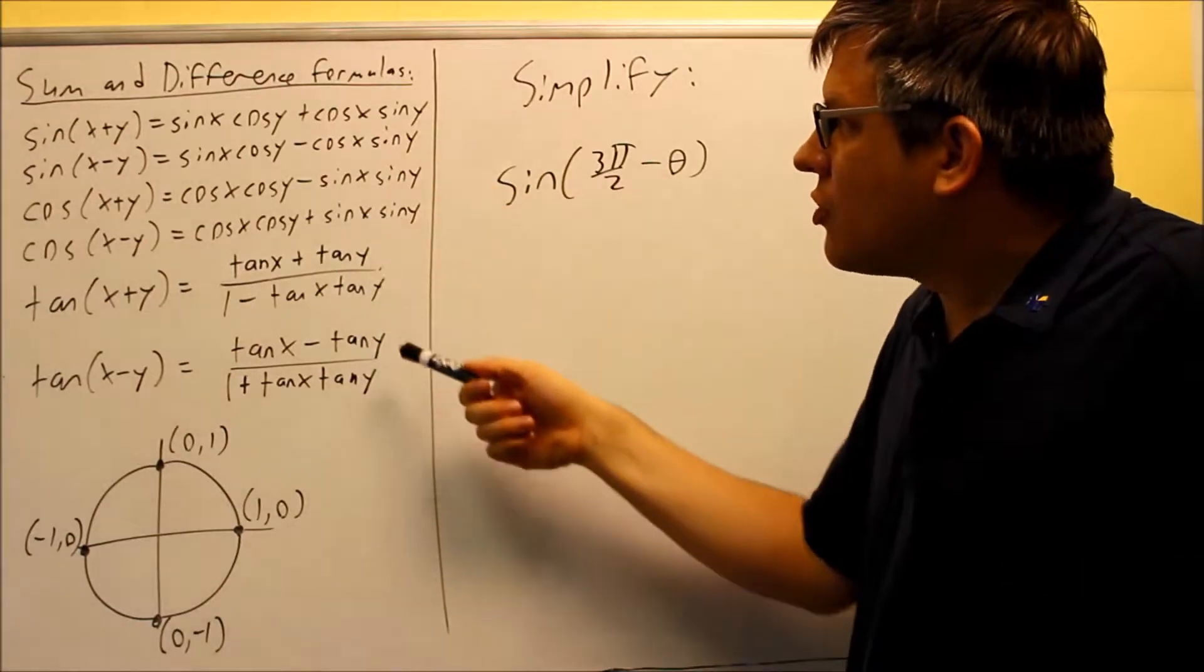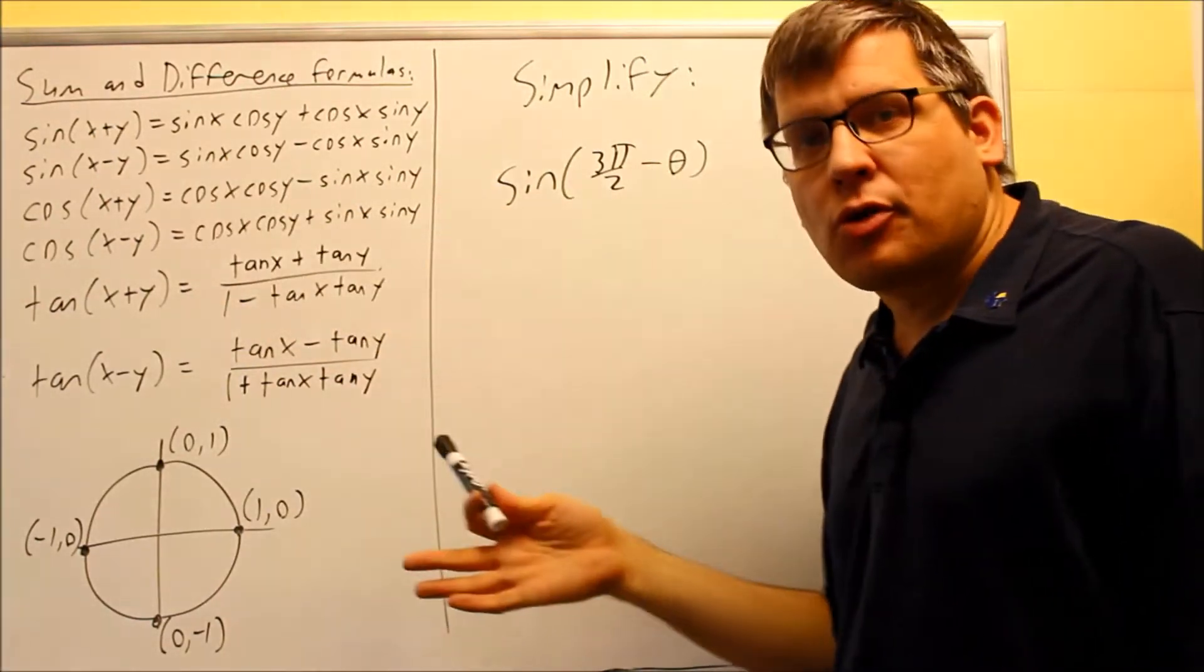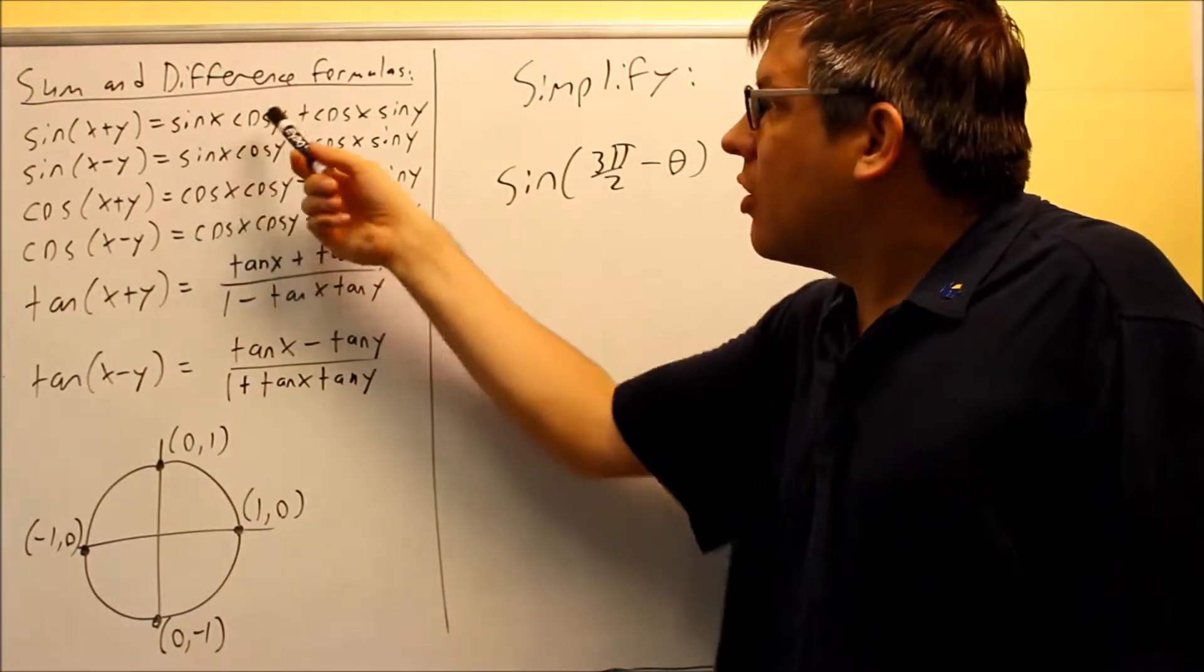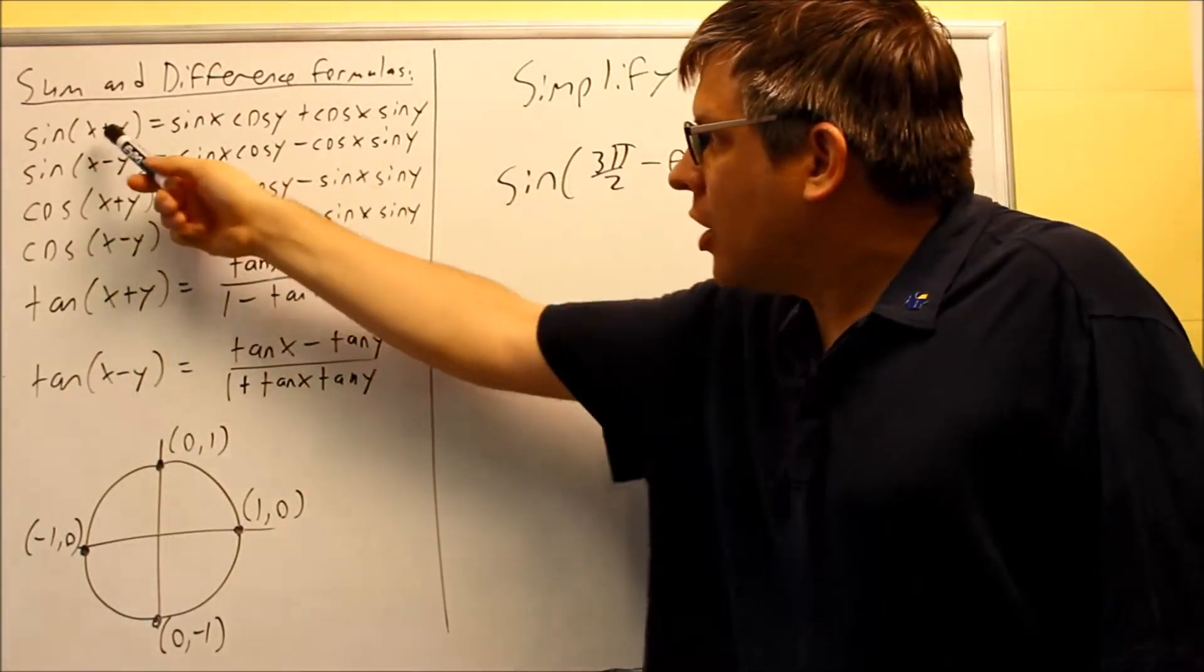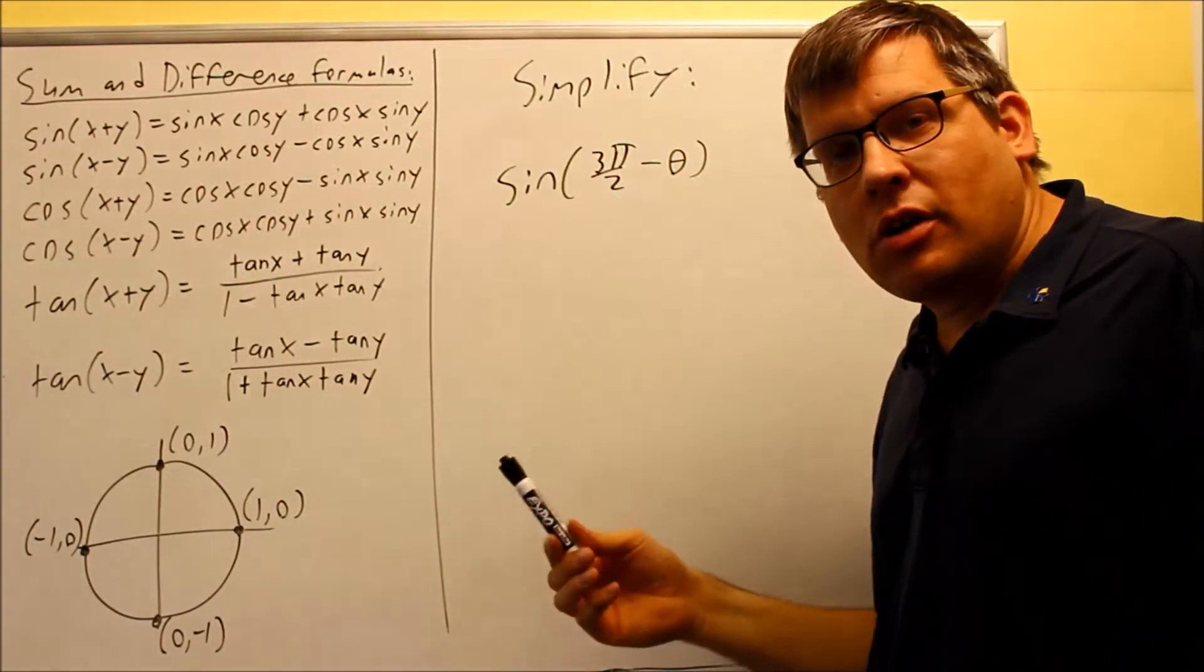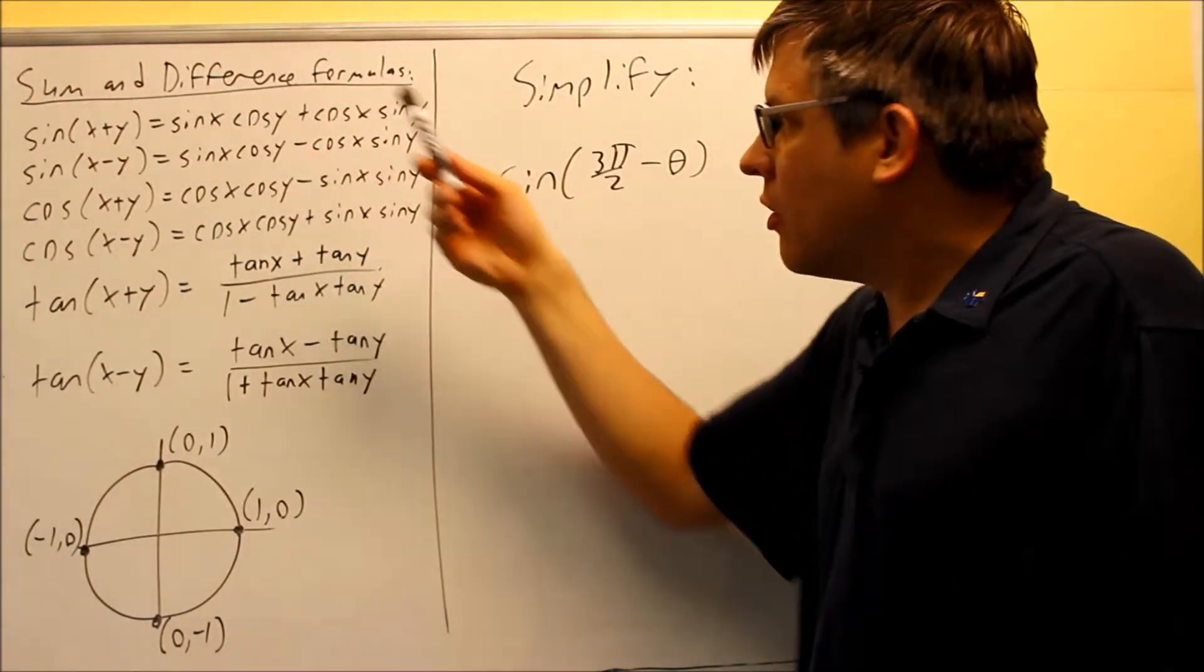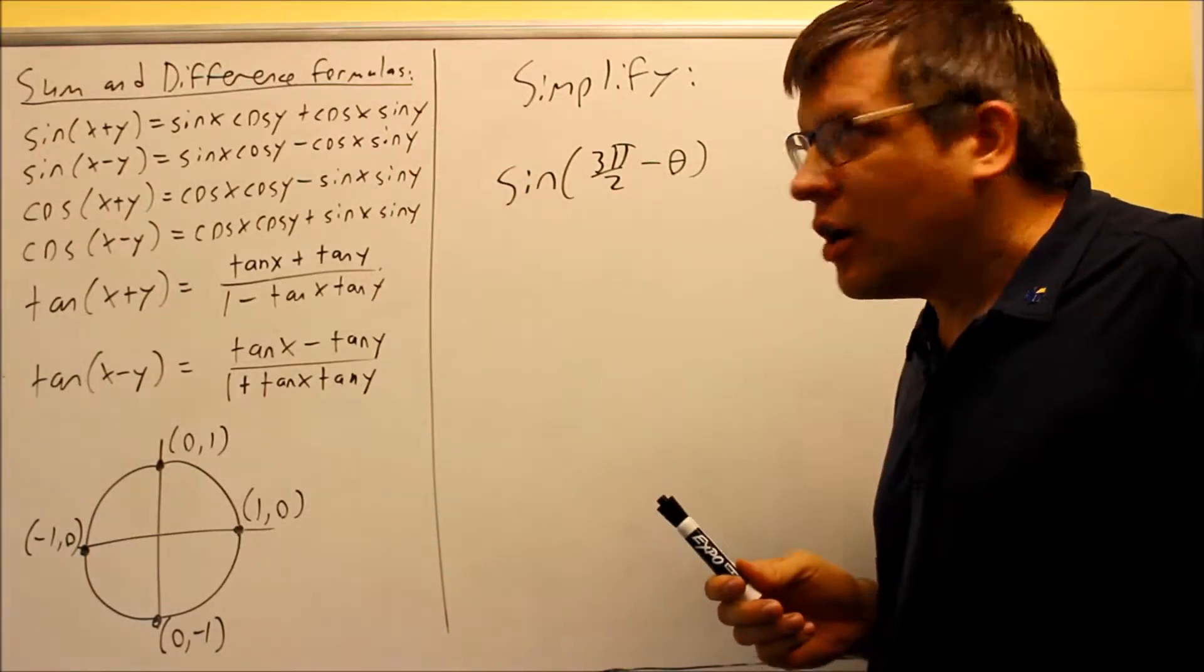So here's the formulas listed for each one. Now the idea here is you're taking something where you have two angles being added together and you're converting it over into single angles. So it may look like you're making the problem more complicated by expanding it out, but in actuality, for purposes of calculus, you may want to have something to be in single angles to make the calculus operation easier. So that's actually what the purpose of these formulas are.